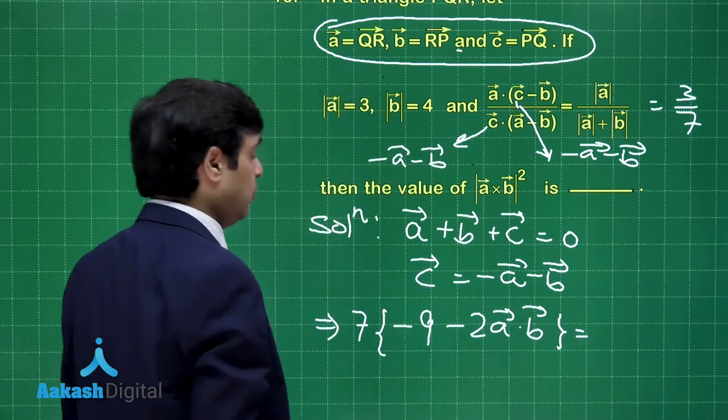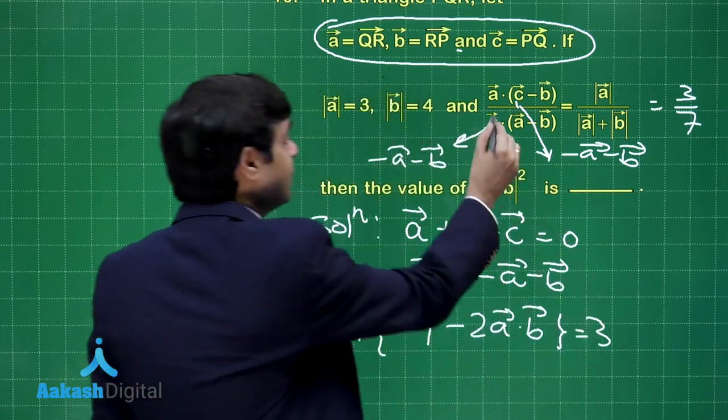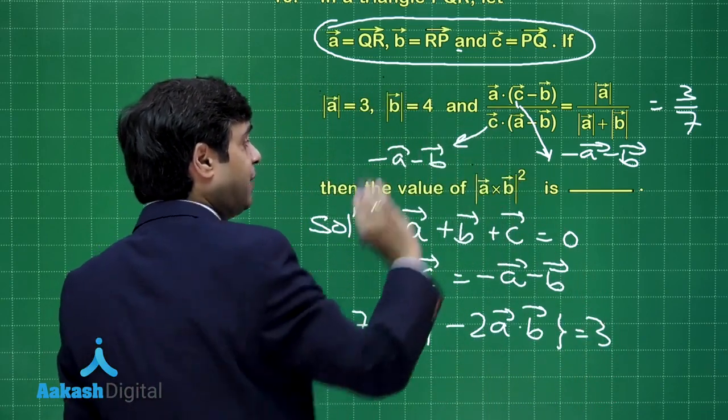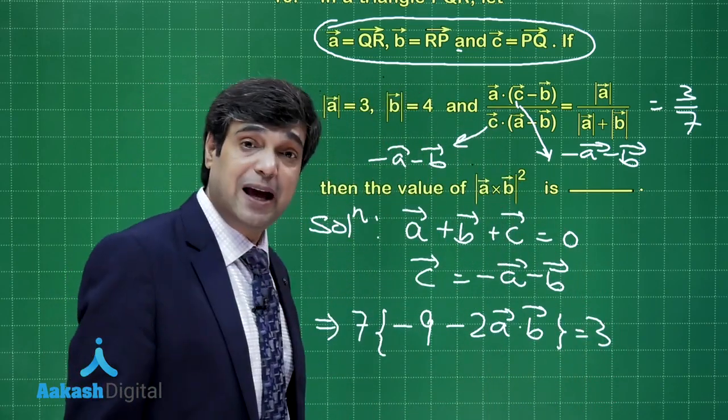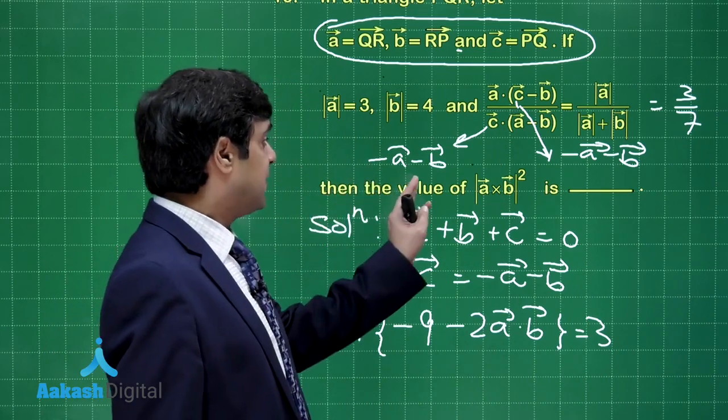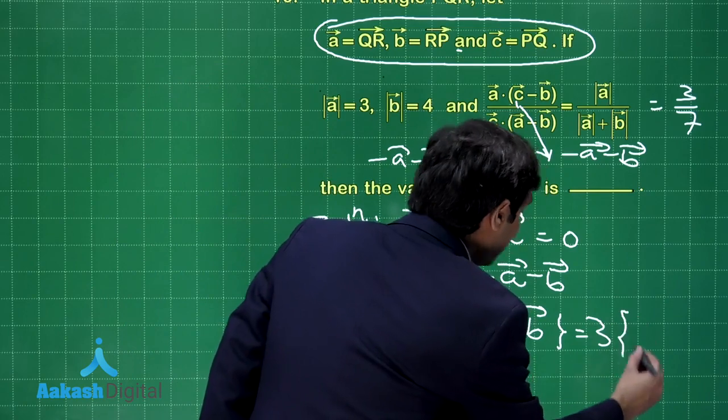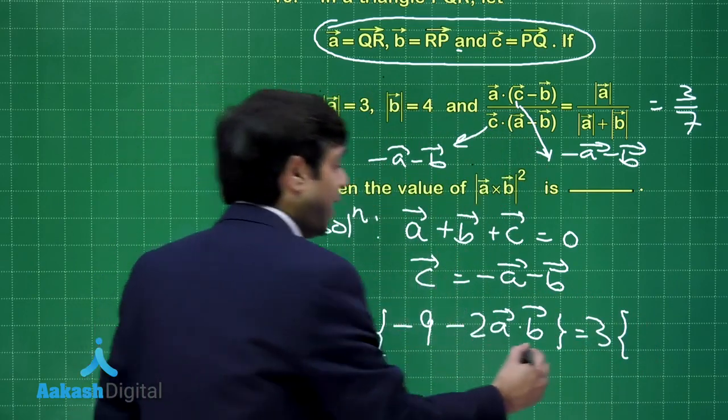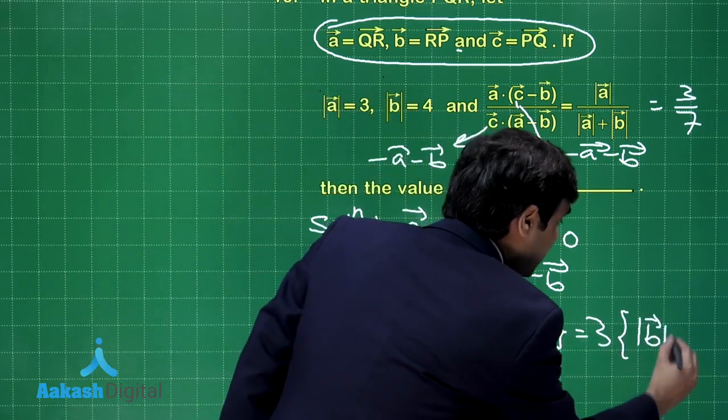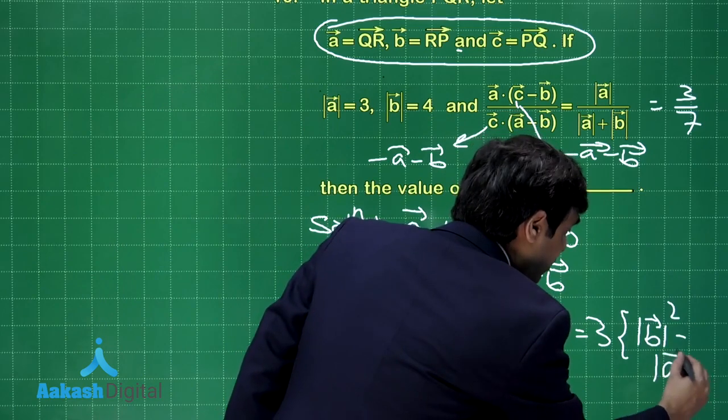This is equal to 3 times C is replaced by this one, and we have A minus B again. So minus of A plus B dot A minus B. That means minus sign can be taken out or we can read it as mod B square minus mod A square.